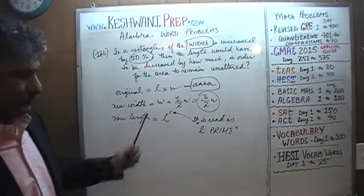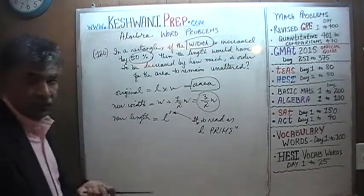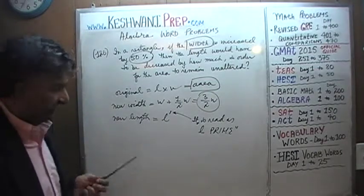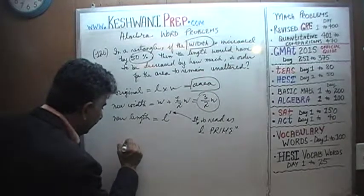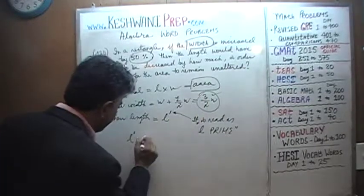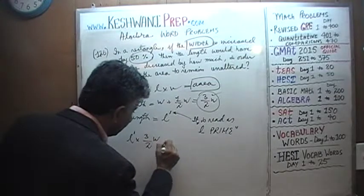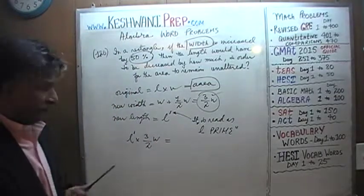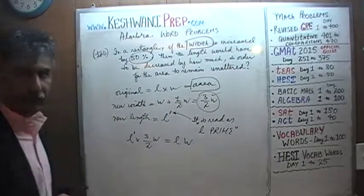This is a new value of the length. So the area now is going to be L prime, which is the new length, times the new width, which is three halves W, which has to be the same as the old area, which is L times W. And that's all there is.